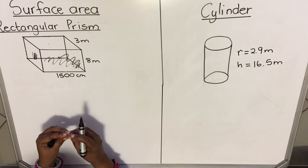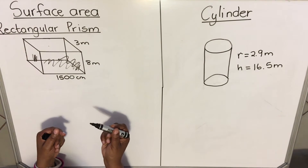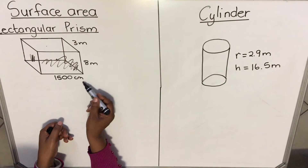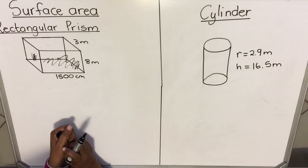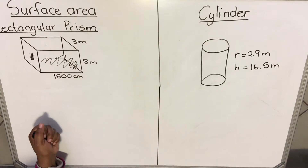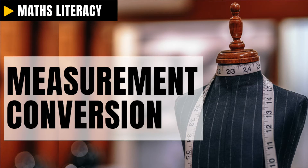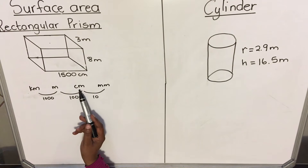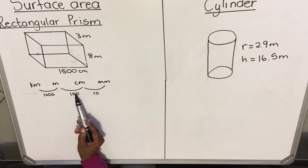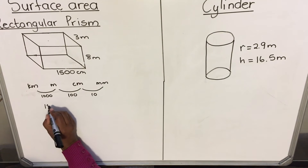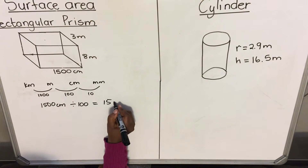In your question paper, they will specify the unit — for example, answer in centimeters or answer in meters. Before you start calculating any shape, you need to have the same units. We're going to convert centimeters to meters. Using our conversion tool: converting from centimeters to meters means going from a smaller unit to a bigger one, so we divide by 100. Therefore, 1500 centimeters divided by 100 equals 15 meters.